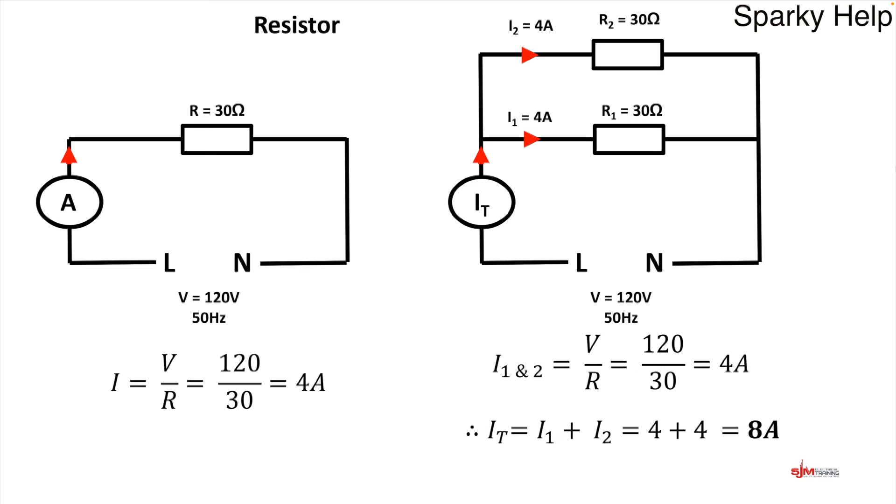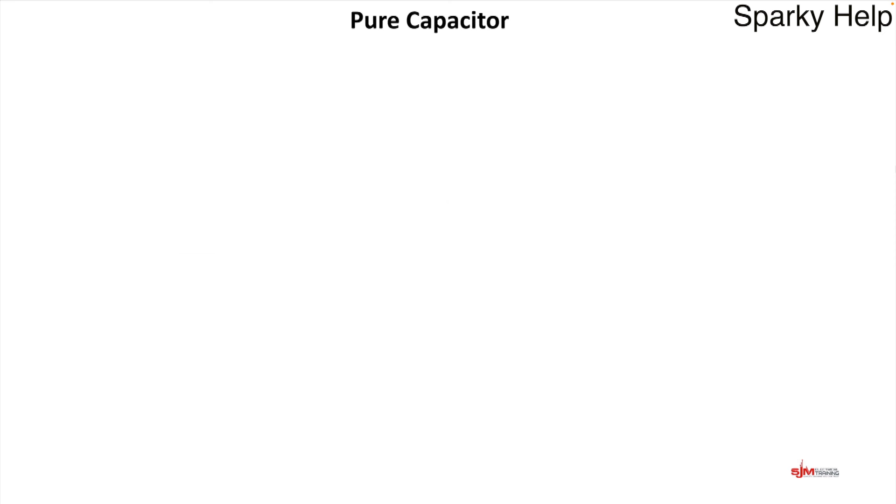Applying Kirchhoff's current law, IT equals I1 plus I2. Therefore, no surprise, hopefully quite basic, but we have 8 amps that flows in this circuit.